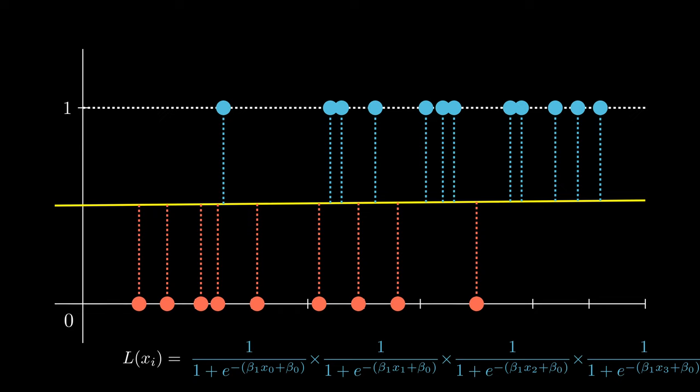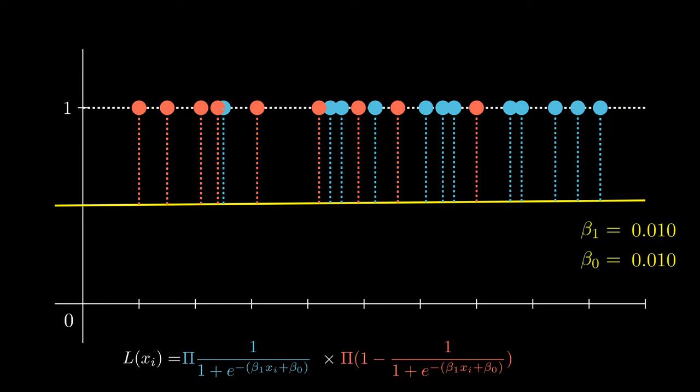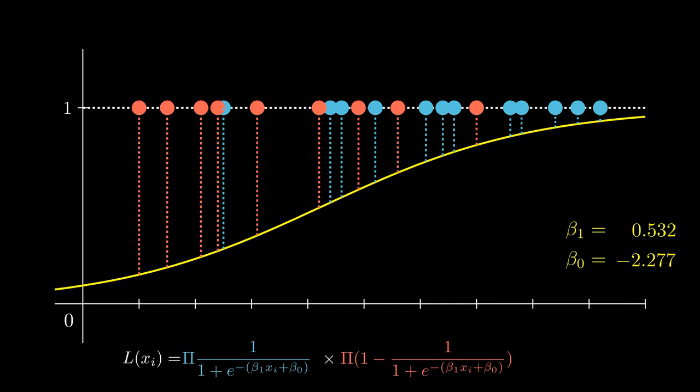Let's talk briefly about maximum likelihood estimation. The way it works is that we are going to take each of these points, multiply their corresponding likelihoods together, and that is going to produce our total likelihood. We need to find the beta coefficients that will maximize the likelihood of our s-shaped curve producing all of these points.